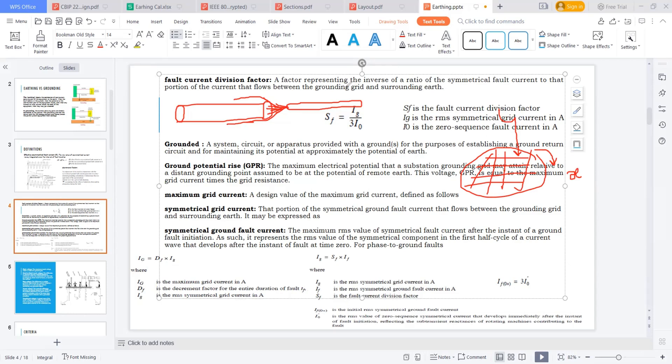A factor representing the inverse of the ratio of the symmetrical fault current to the portion of current that flows between the grounding grid and the surrounding earth. Suppose IG is the symmetrical grid current. I have a grid, so some current will flow through this grid and some current will flow into the system.